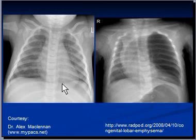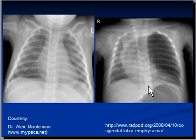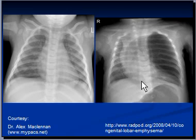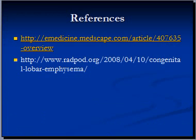The next slide shows a normal chest X-ray of a baby, and on the right-hand side you can see a chest X-ray with congenital lobar emphysema where the left upper lobe is involved. These are the references. Thank you very much.